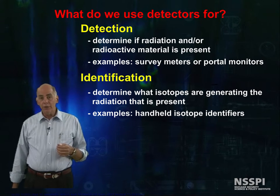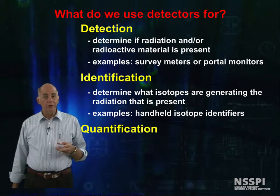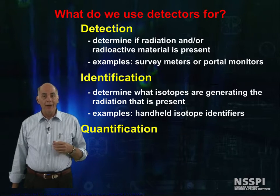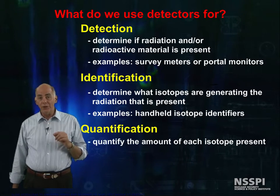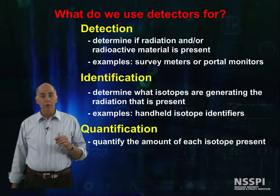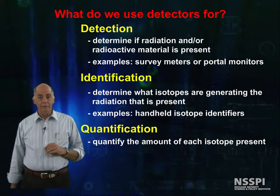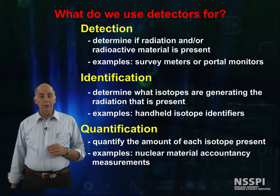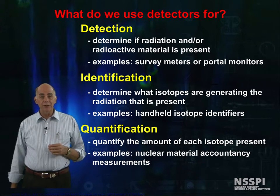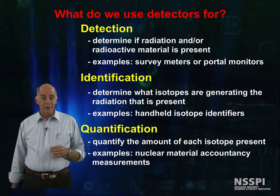The third thing we can do is quantification. Not only can we identify which isotopes are generating radiation, but we can quantify the amount of each radiation and each radioisotope present. Examples of this would be nuclear material accountability measurements, or the amount of particular isotopes in special nuclear material for forensic analysis.